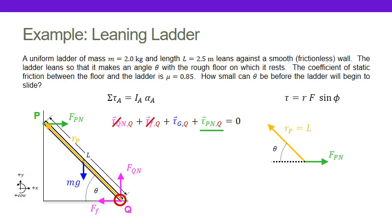Working out the angle, I draw my vectors and notice that the angle between them is not theta but 180 minus theta. So I write it out: it's going to be L times the normal force of the wall times sine of (180 − θ). It turns out that sine of (180 − θ) equals sine of θ, so I've got the magnitude of my torque.